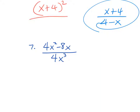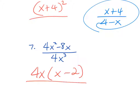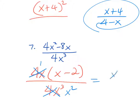For this numerator, the GCF is 4x, which gives 4x(x - 2). The denominator is 4x cubed. I can simplify the 4x: the numerator 4x becomes 1, and 4x³ ÷ 4x becomes x². My final answer is (x - 2) over x squared. I cannot cancel an x out of the numerator because x is connected to the minus 2.